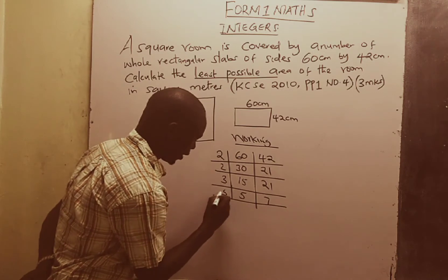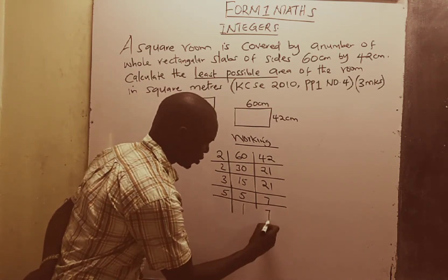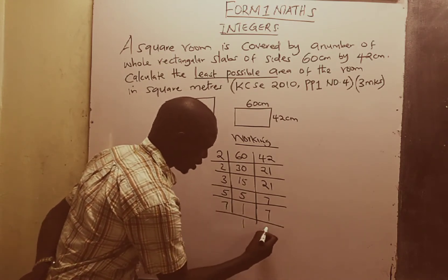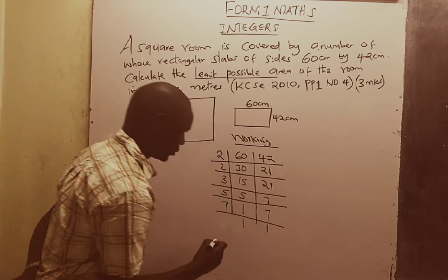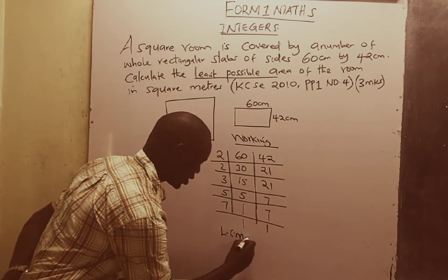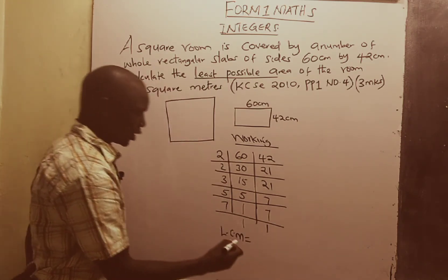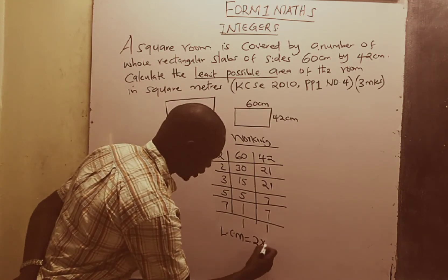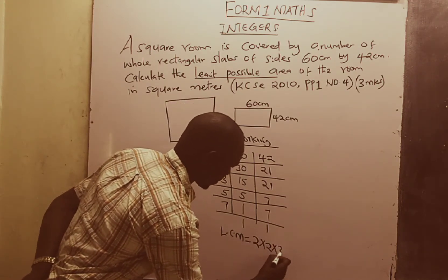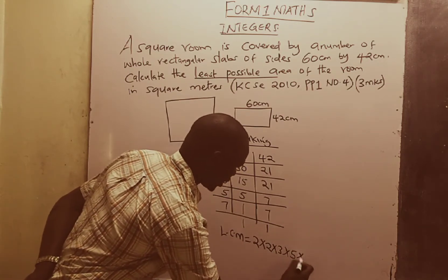Now we take 5: 5 goes into 5 once, but it does not go into 7. And lastly we take 7, giving us 1 and 1. Our LCM will be equal to the product of all these factors: 2 × 2 × 3 × 5 × 7.